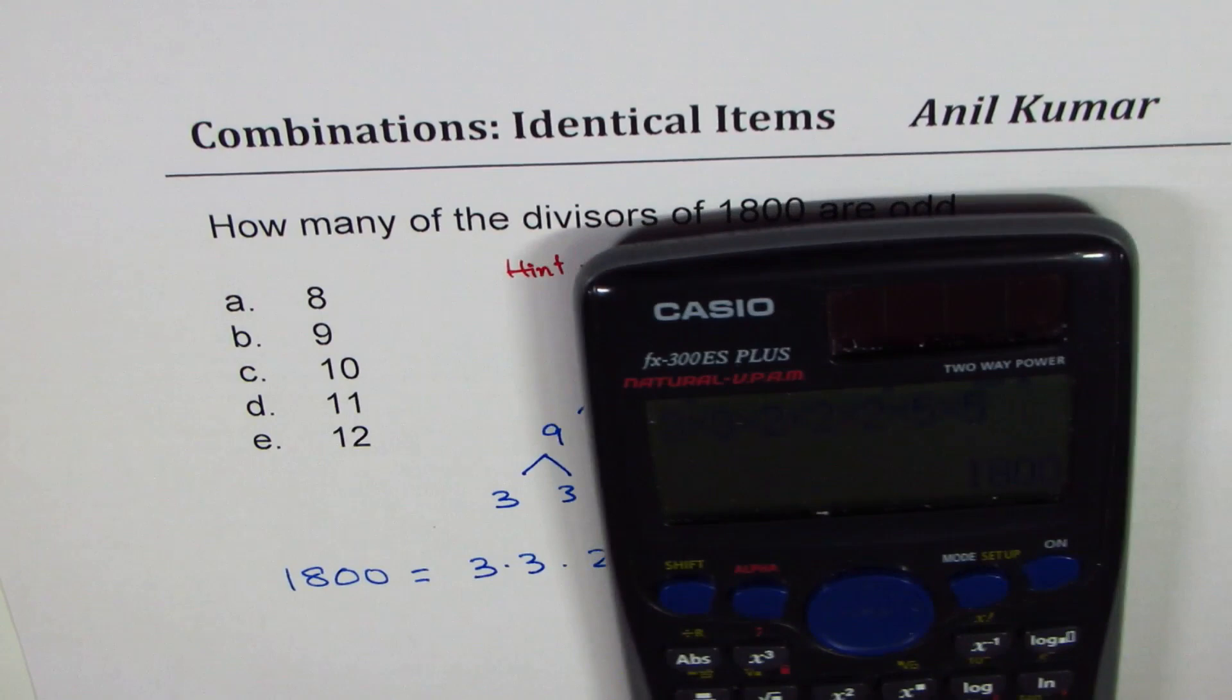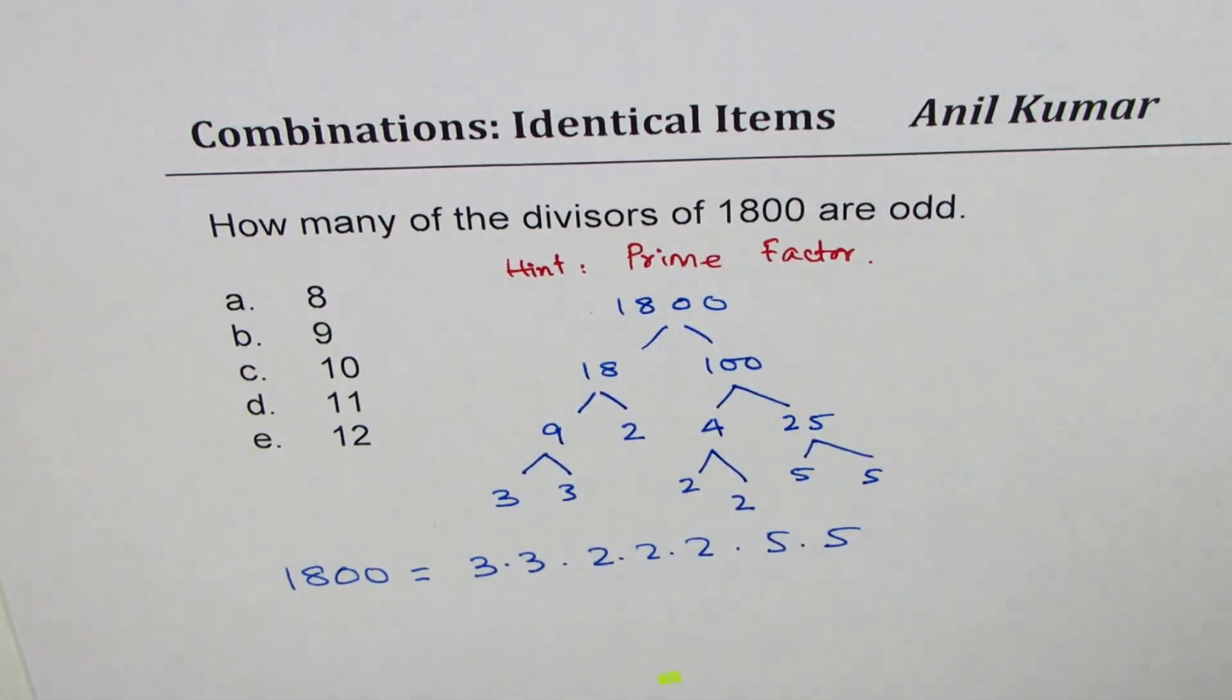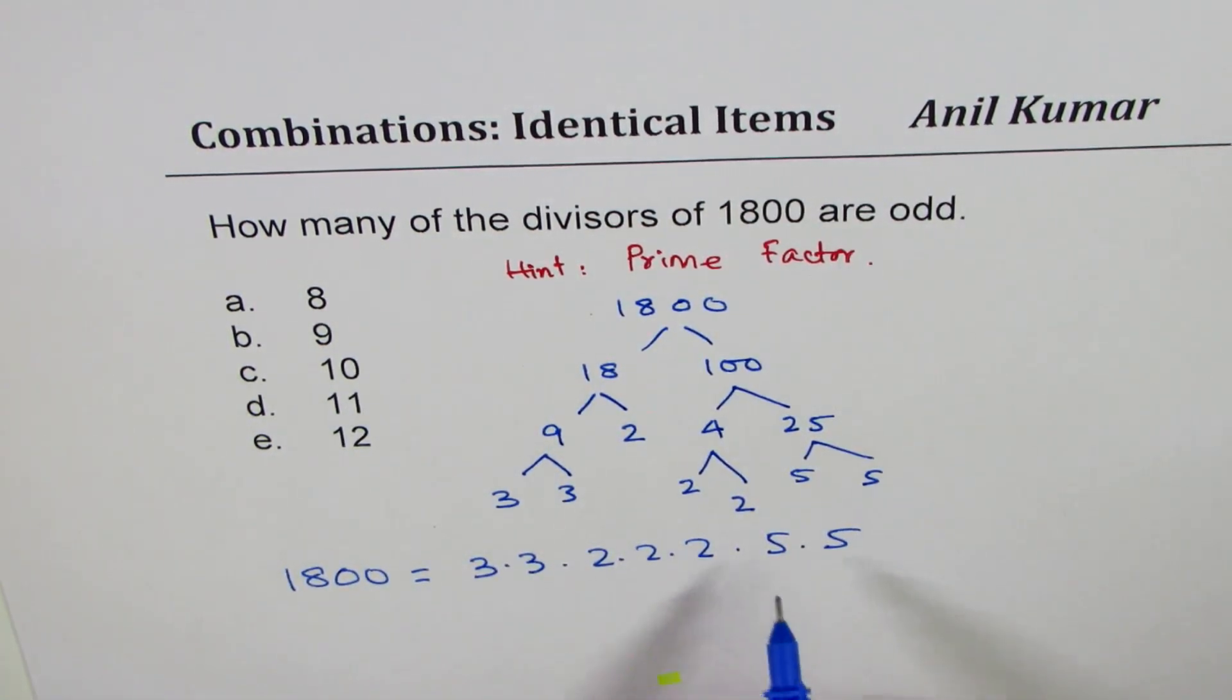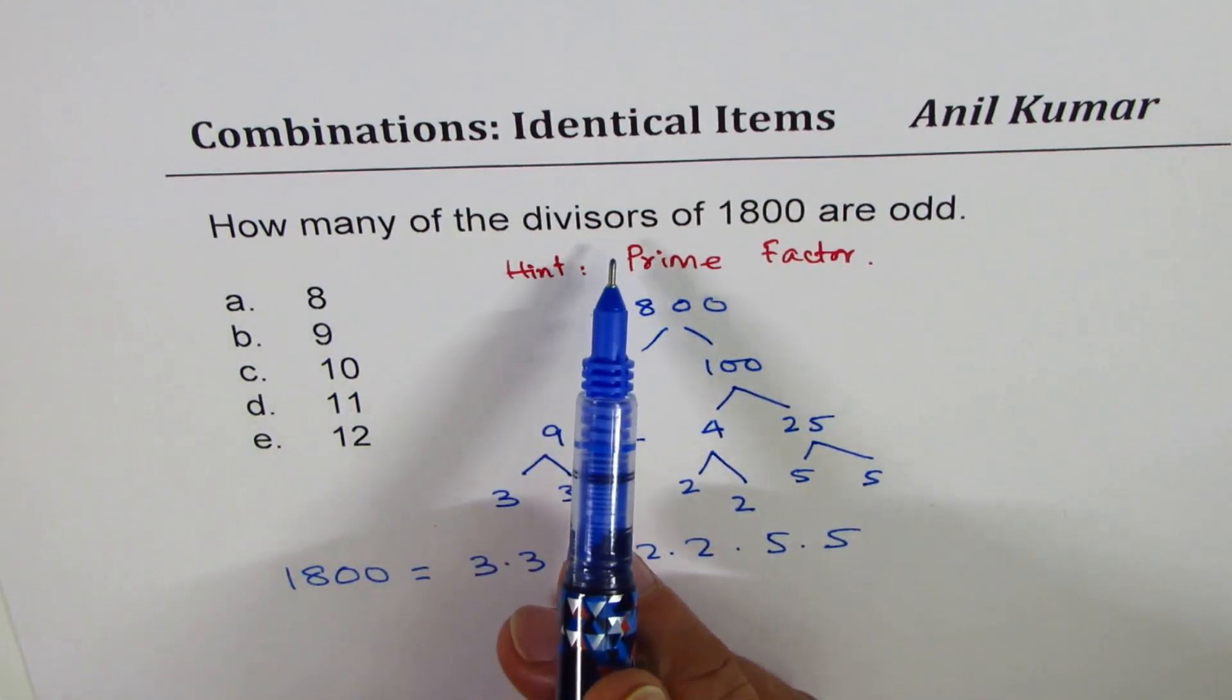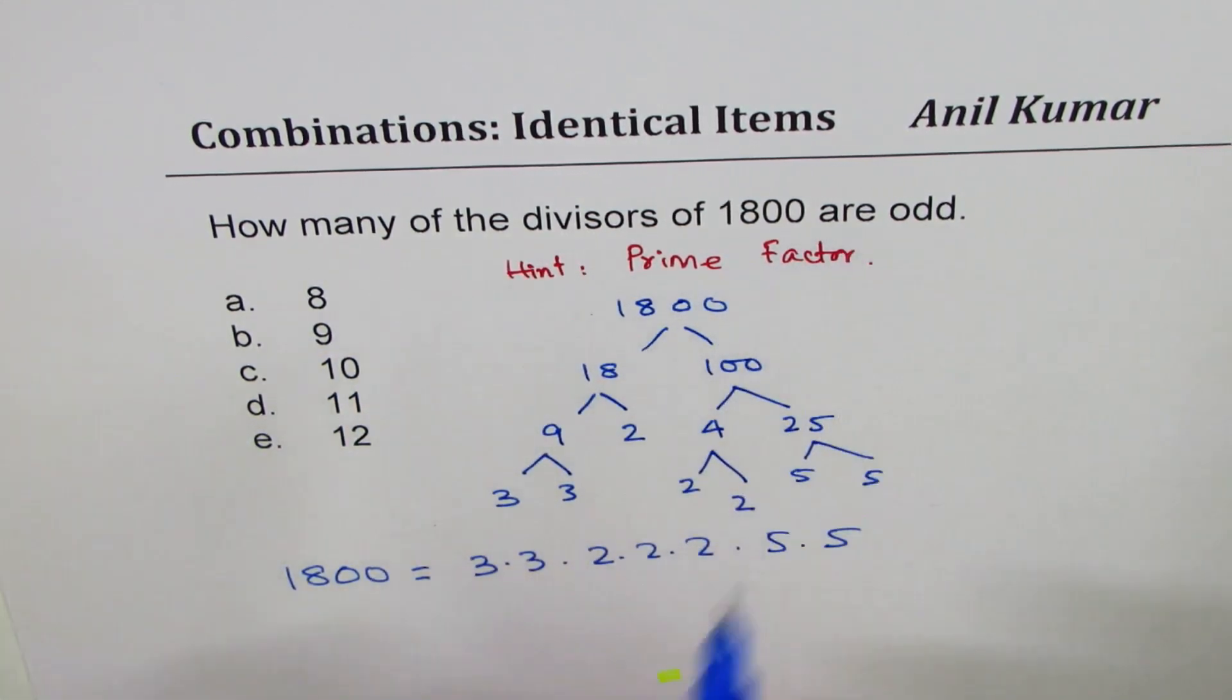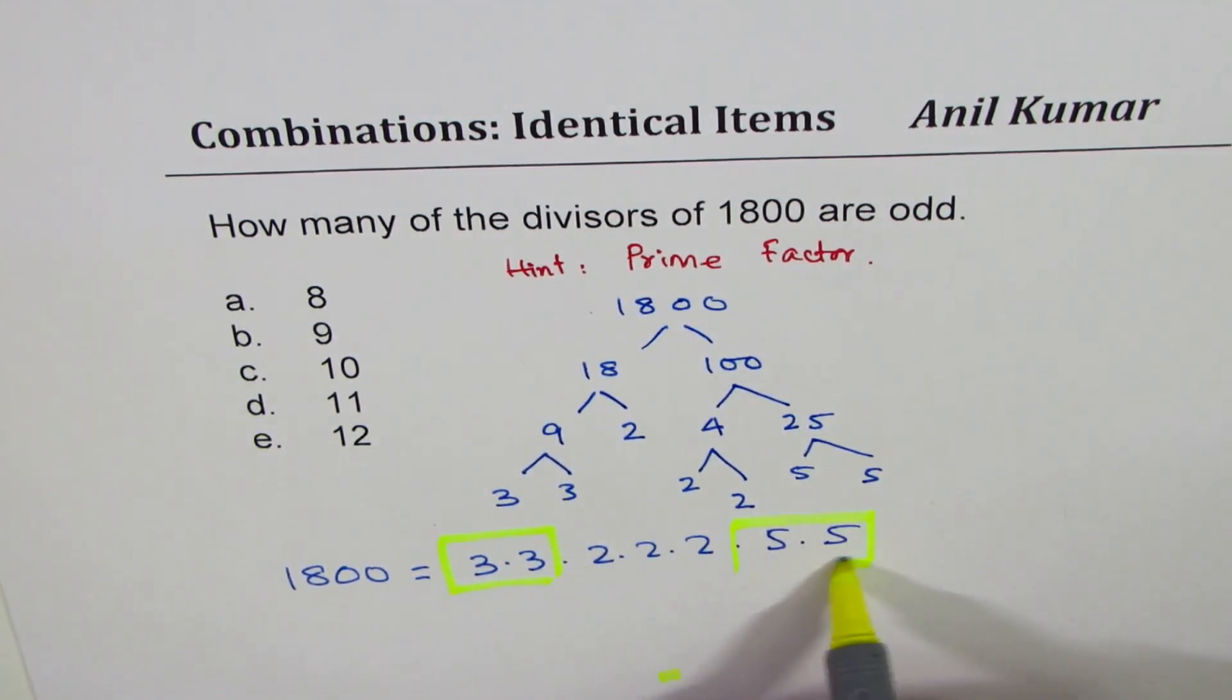So we have correctly done prime factorization. Now, how many of the divisors of 1800 are odd? If you are looking for odd divisors, we are looking for numbers which are not two, right? So these are our factors which can help us find the divisors.